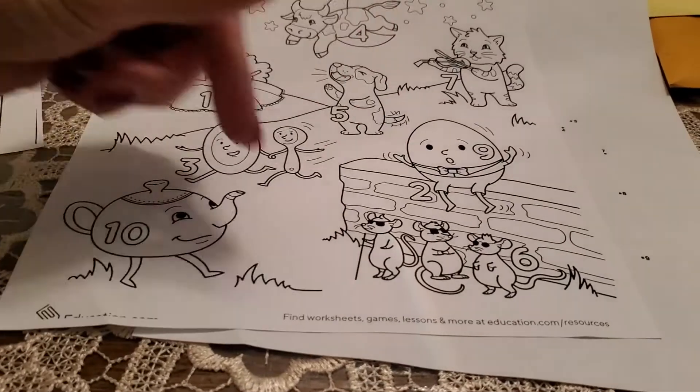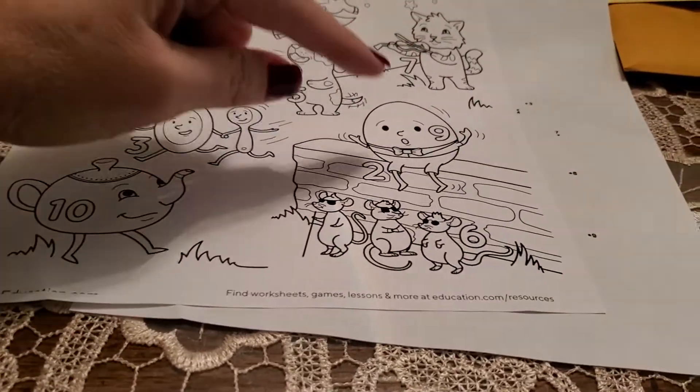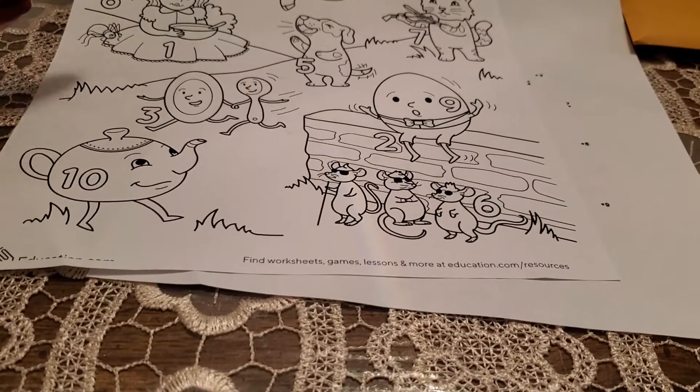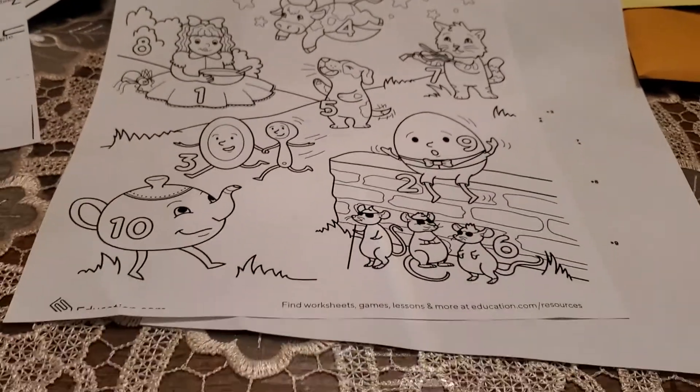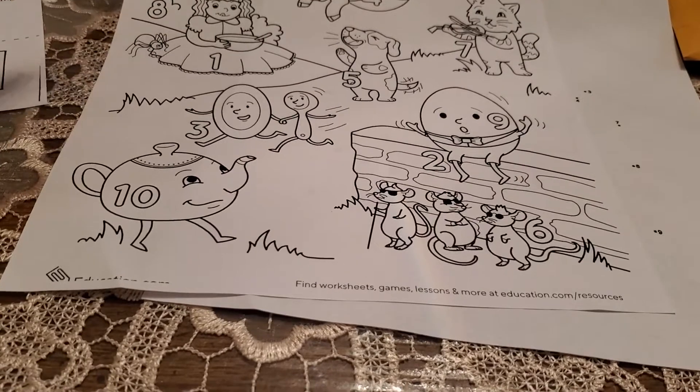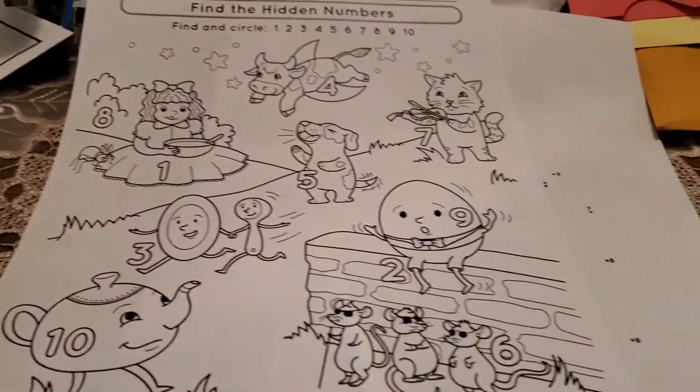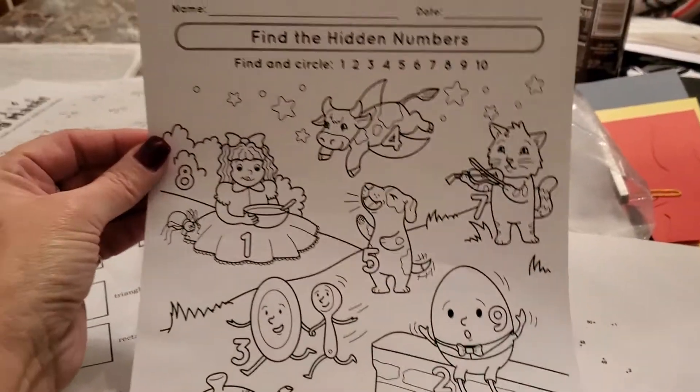This is all nursery rhymes. The cat and the fiddle, Humpty Dumpty, I'm a little teapot, the dish ran away with the spoon, Mary had a little lamb. No, Mary, Mary, quite contrary. So these are all nursery rhymes.